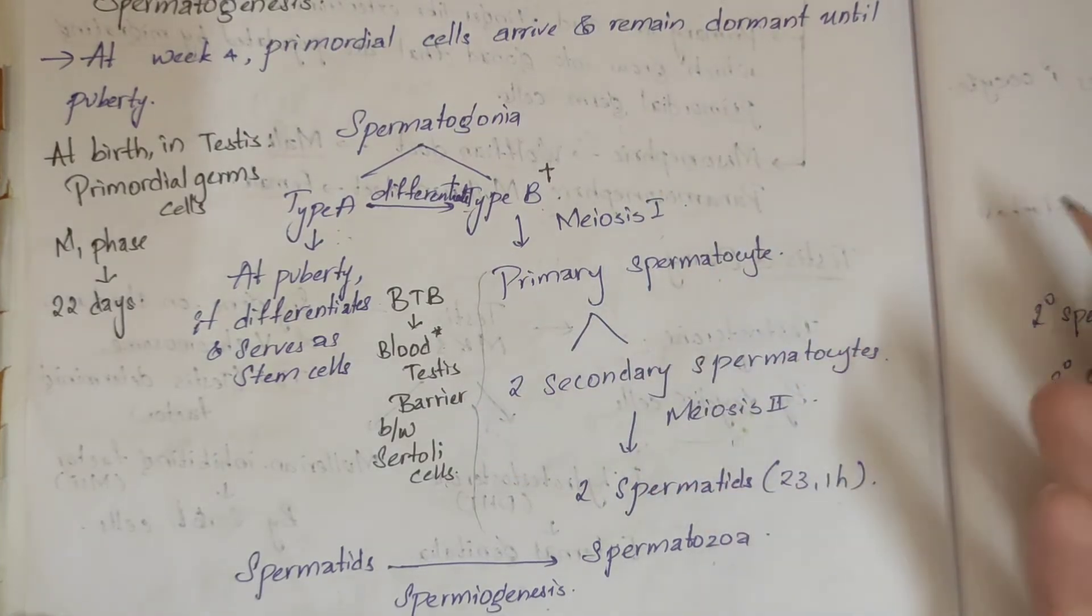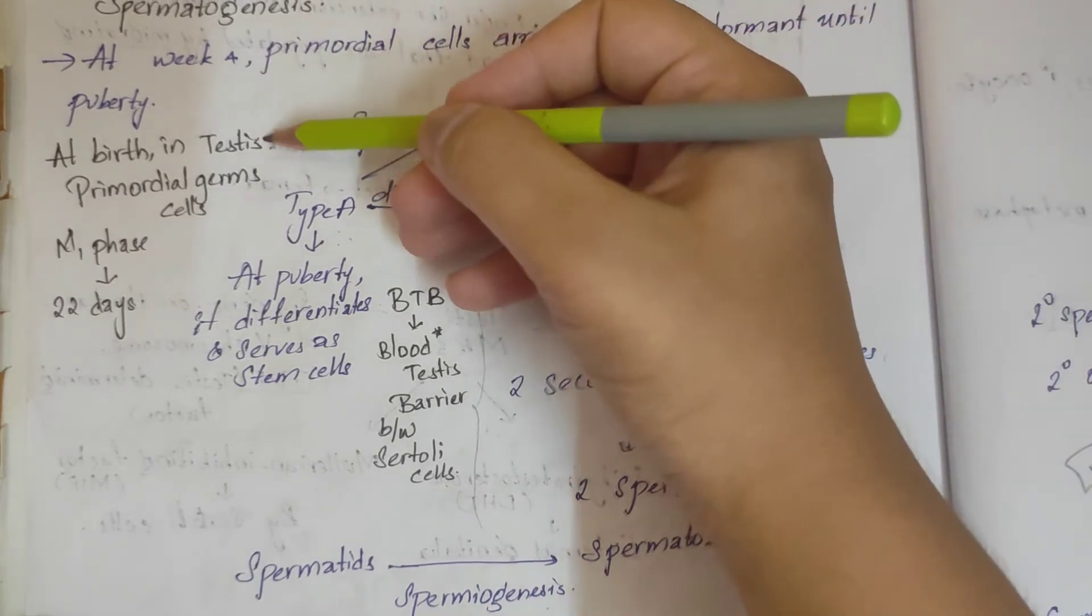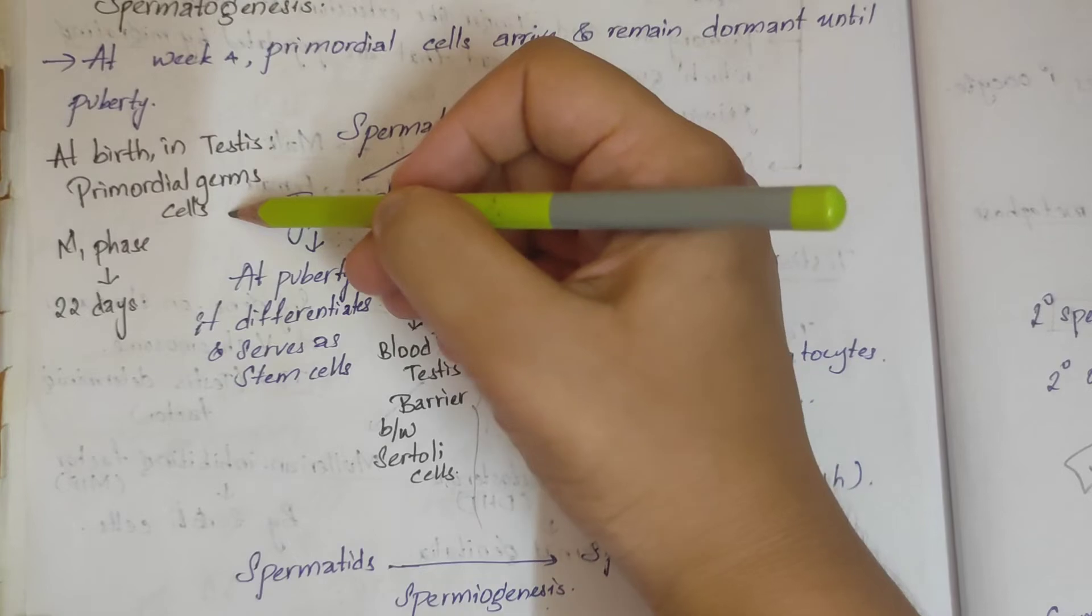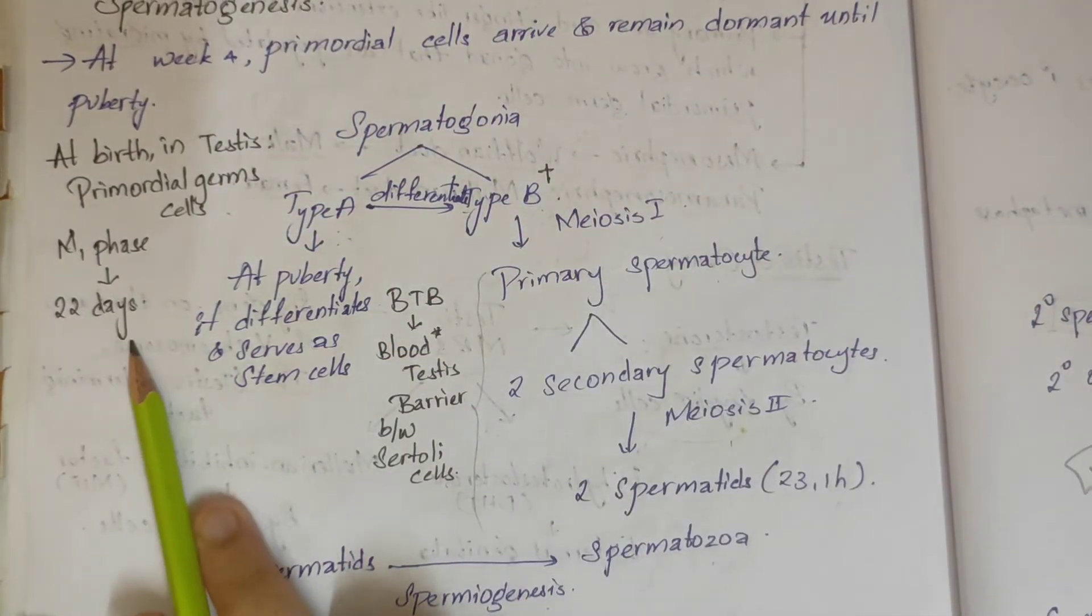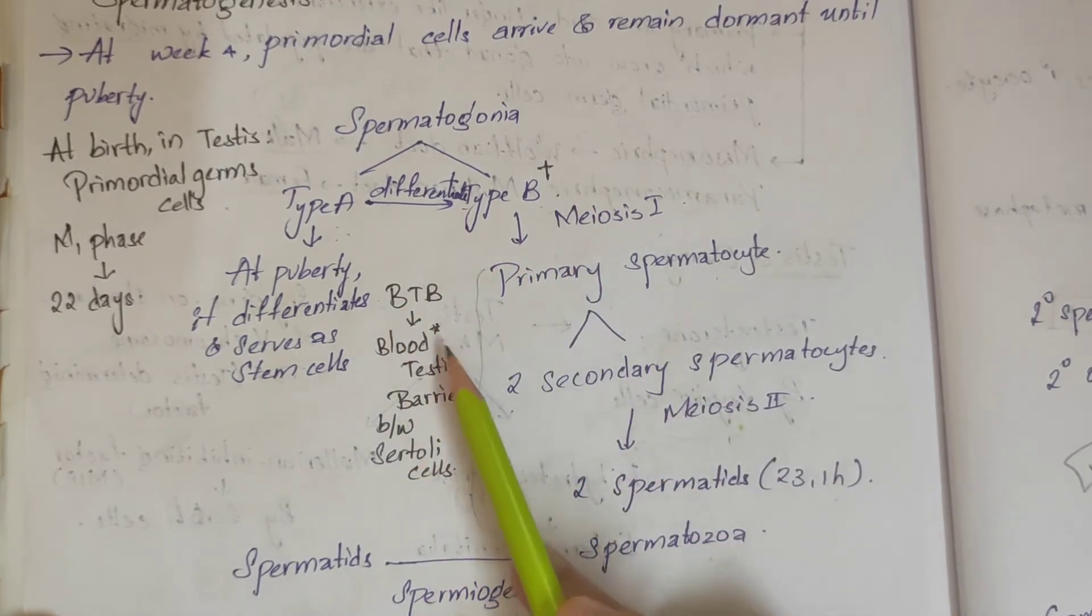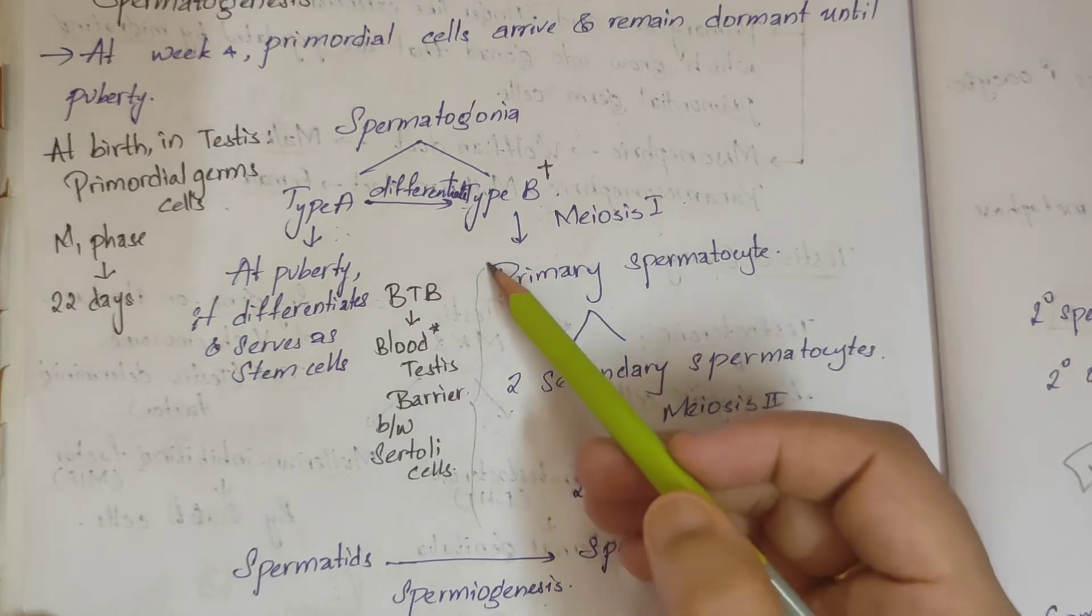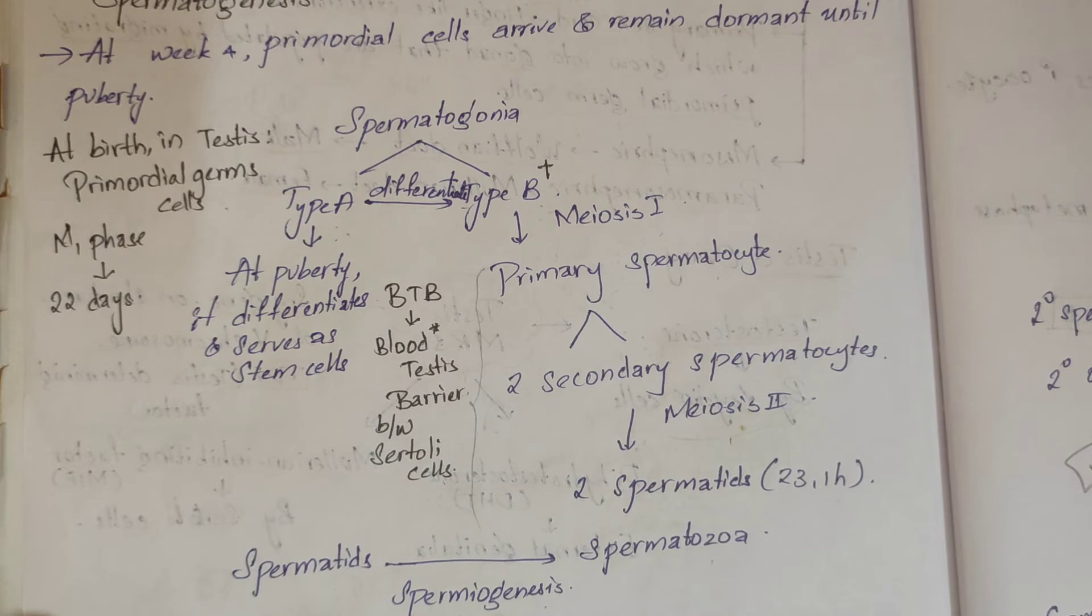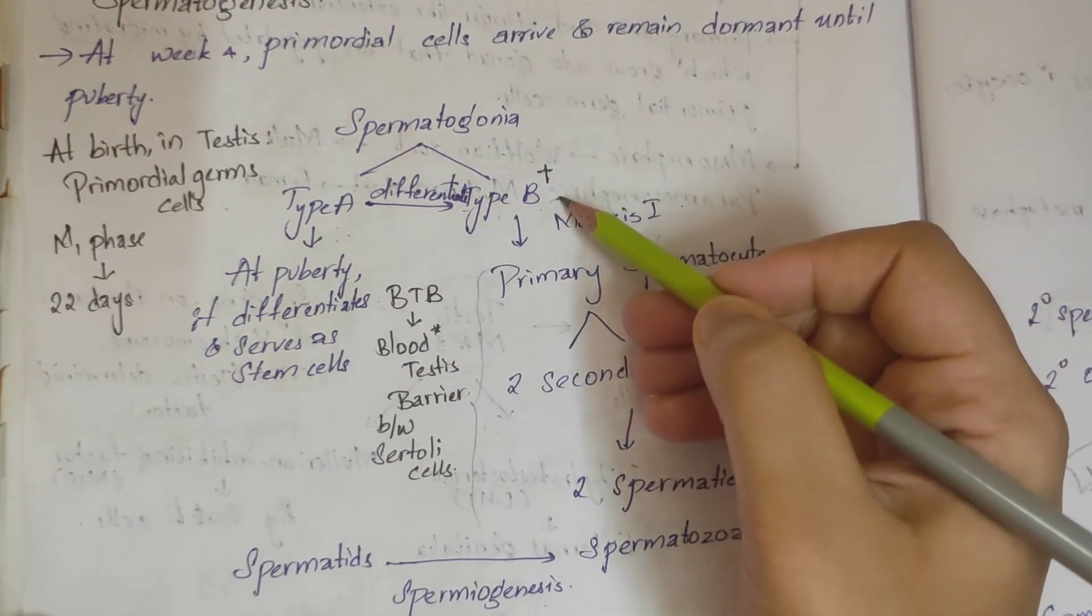At birth in testis, only primordial germ cells are present. The M phase takes place in 22 days. The blood-testis barrier protects from primary spermatocytes to spermatozoa, but not from type B, because type B is outside the Sertoli cells, so that is not protected.